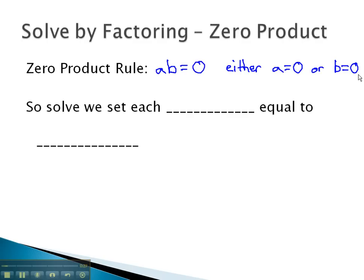So if we have factors that equal 0, to solve, we set each factor equal to 0. Let's take a look at some examples where we can set factors equal to 0 to find out what x equals.